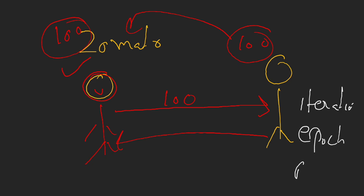So in that case, the batch size is 100, epoch is 1, and iteration is also 1.